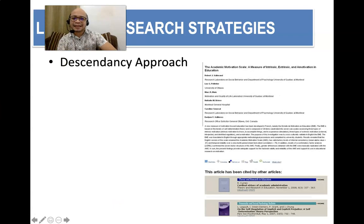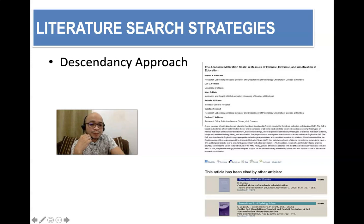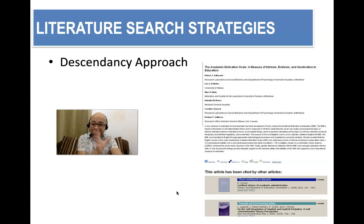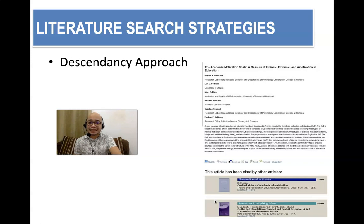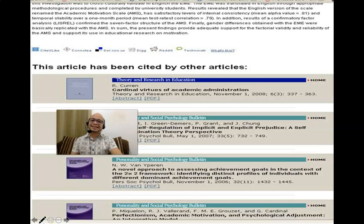We also have the descendancy approach. For example, in your search engine, a particular article came up, and sometimes the search engine would say these articles have been cited by other articles, and these articles may also be relevant to you as well. You might as well check those out. This is what you call the descendancy approach — this article has been cited by other articles.